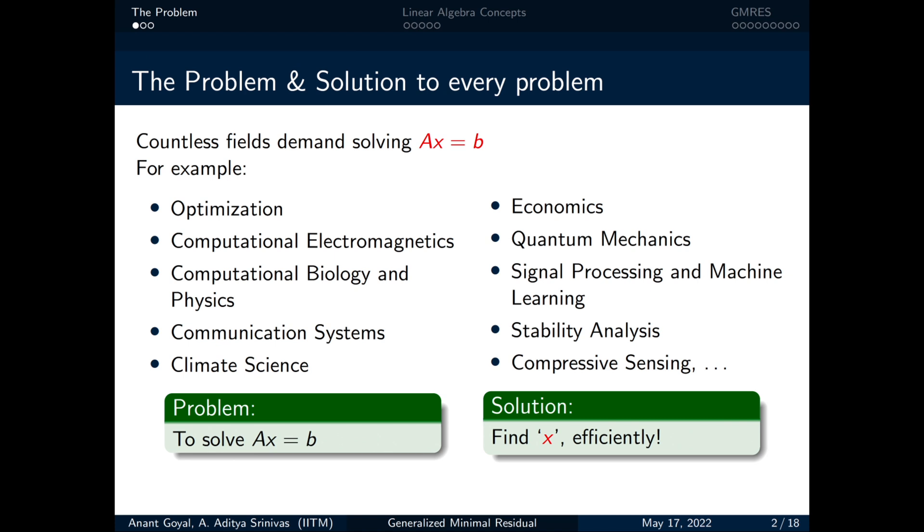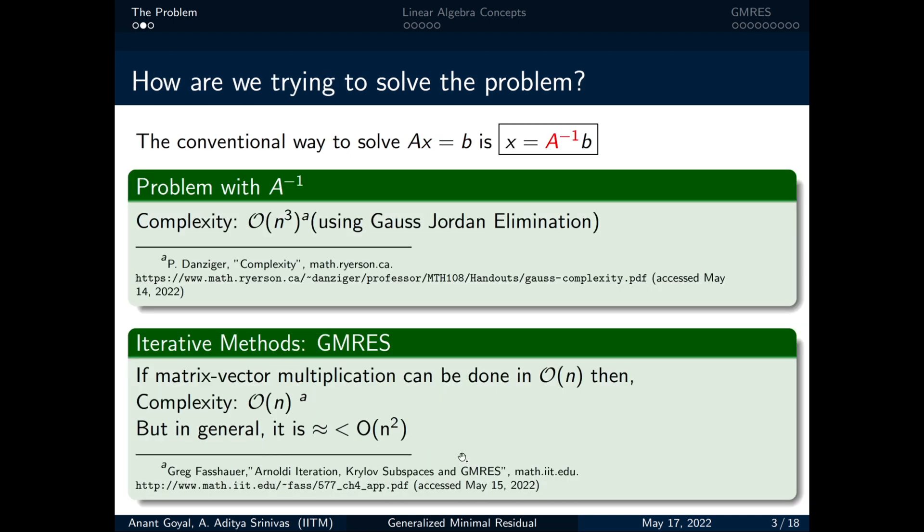Here we are discussing an efficient way to solve Ax equal to b. Our problem is to solve Ax equal to b and the solution is to find x efficiently. Conventionally we find A inverse to get a solution but the computational cost of getting a matrix inverse is of order n³ by using Gauss-Jordan elimination.